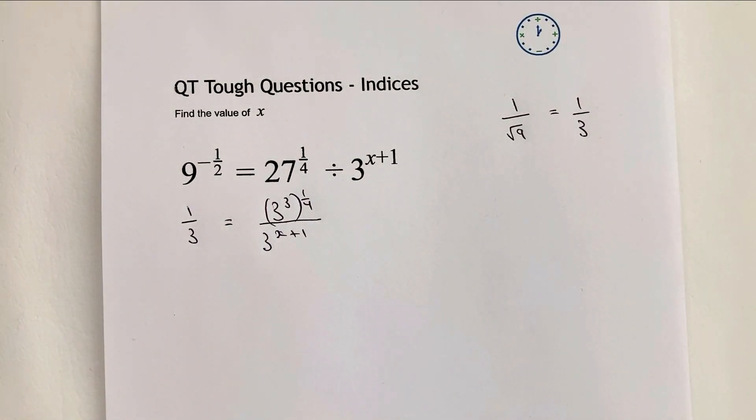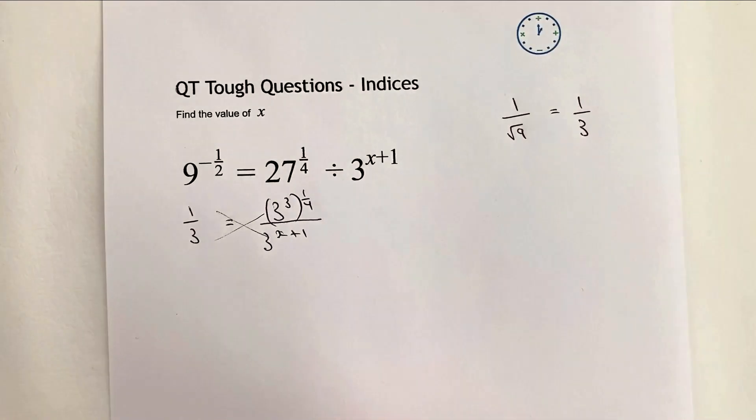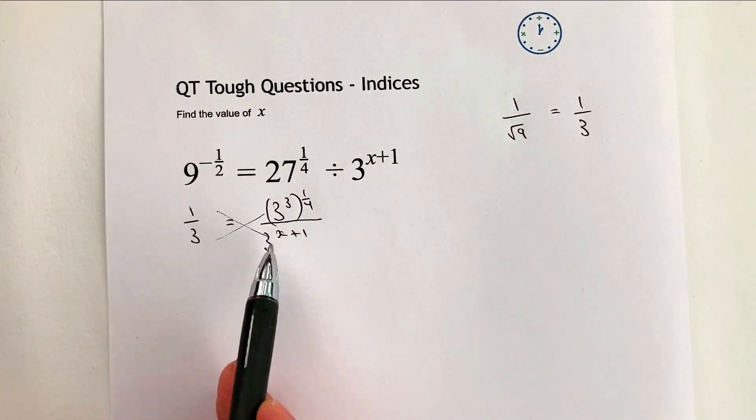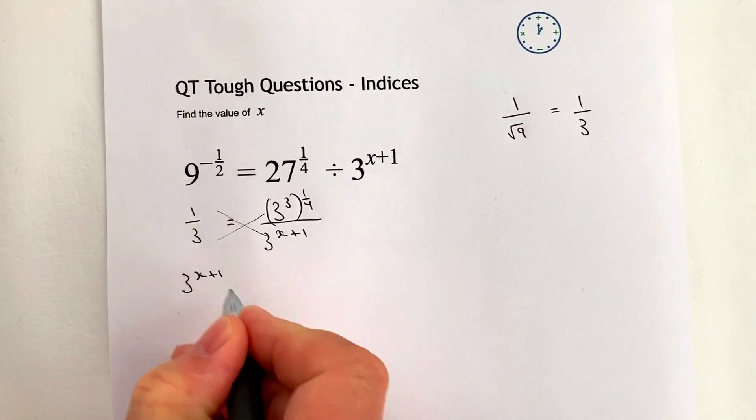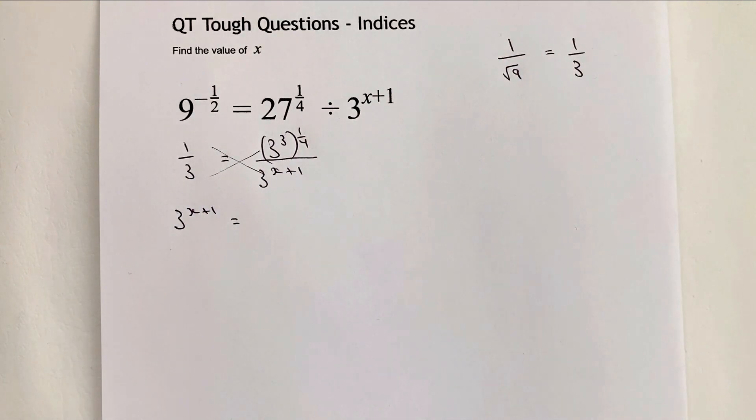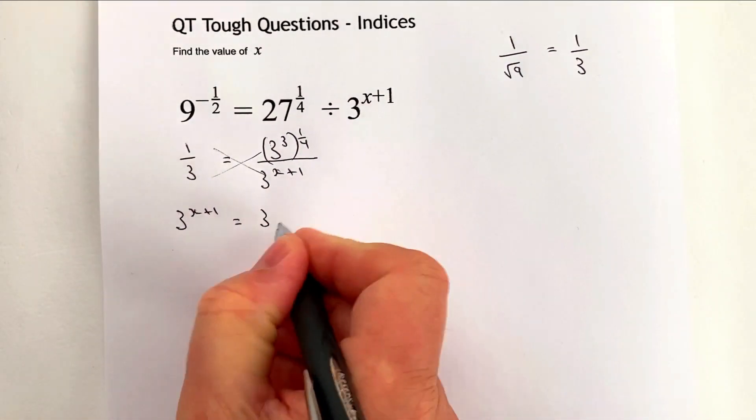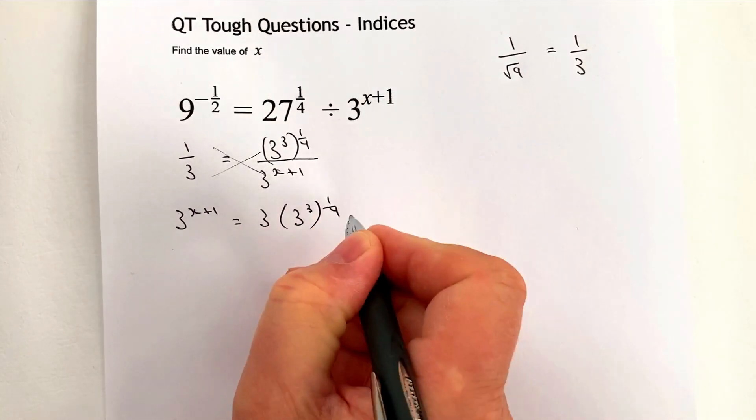So where do we go from here? Well, really, it would be quite useful, I think, to actually cross multiply. So what I'm going to do is I'm going to multiply across, because then that means I've got 1 times 3x plus 1, which is 3x to the power of x plus 1. And on the right hand side, I'm going to get 3 times 3 to the power of 3 to the power of a quarter.